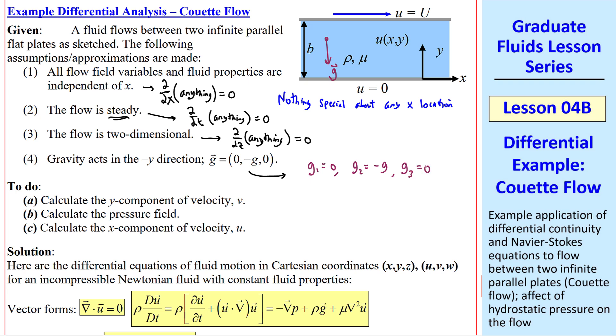The 2D approximation can be written as del del z of anything equals zero. And finally number four is that gravity acts in the minus y direction. So the components of g are zero, negative g, and zero. We want to do three things: calculate v, calculate the pressure field p of xy, and the x component of velocity u.